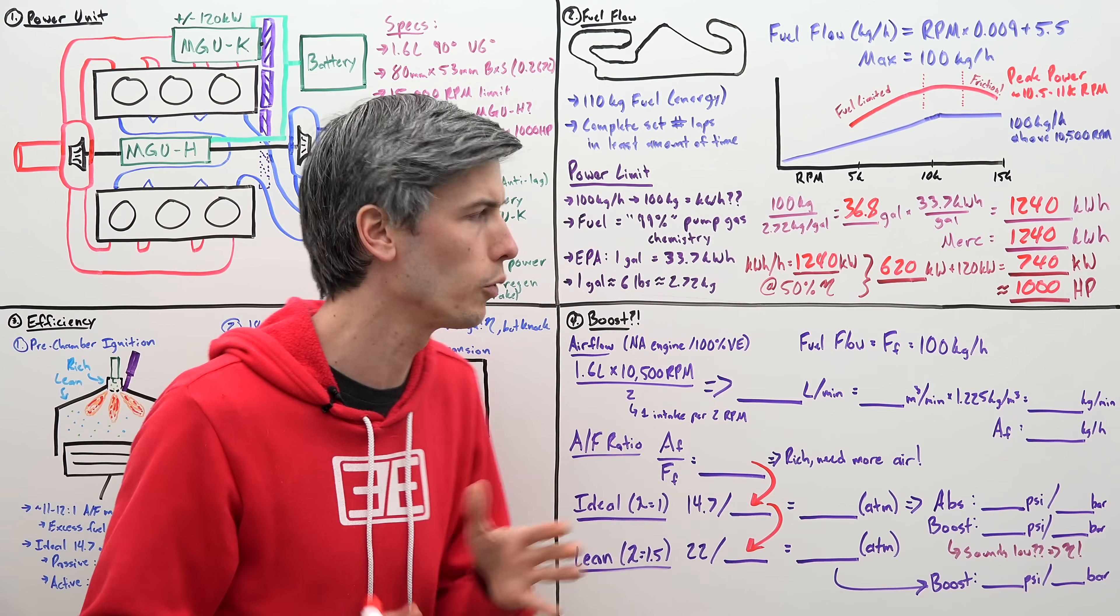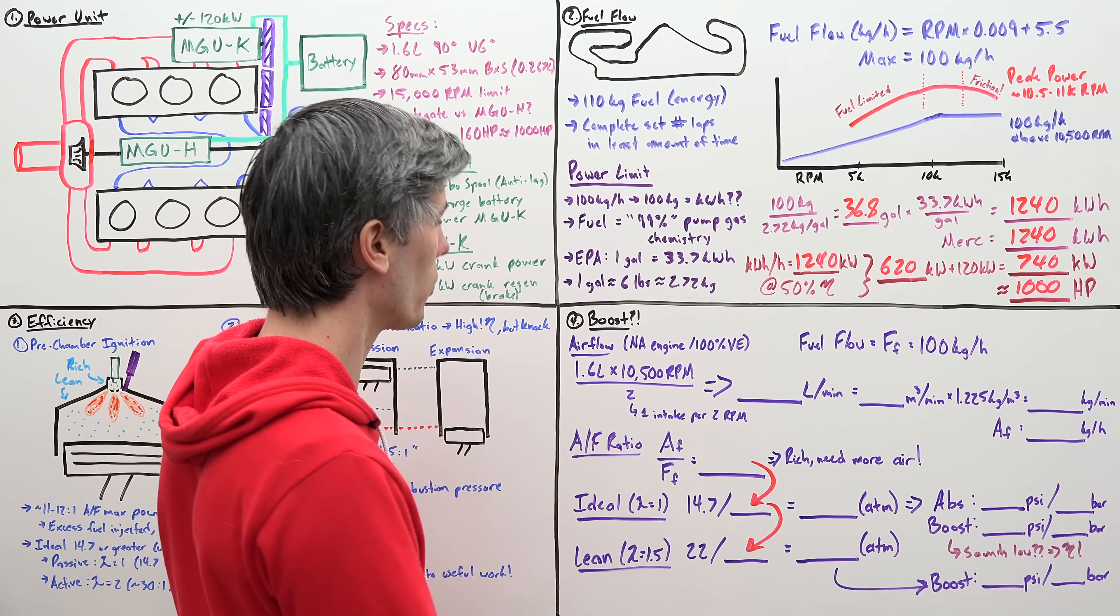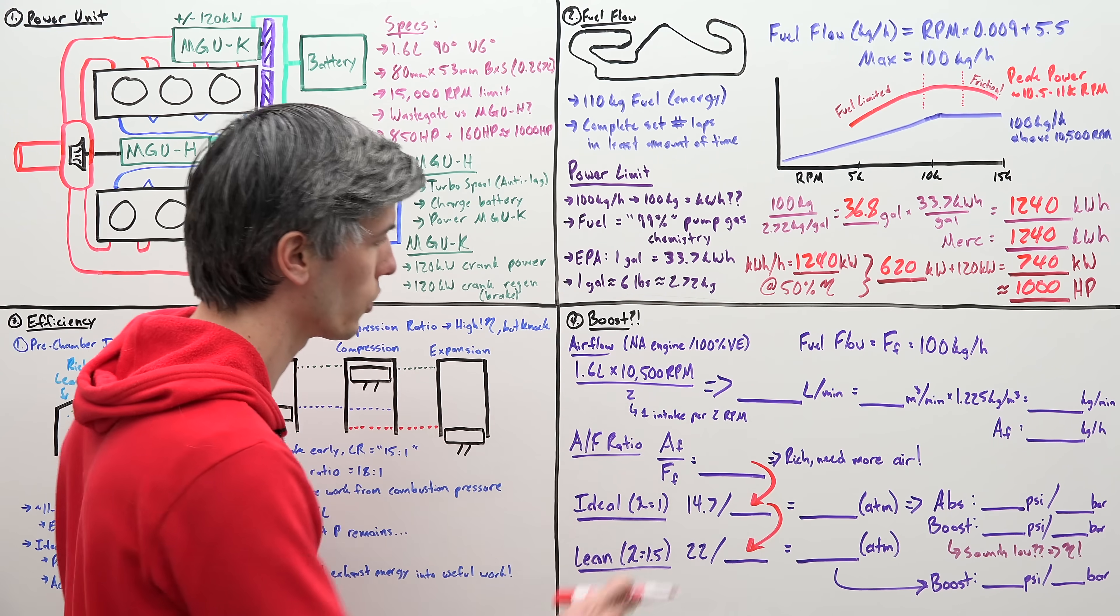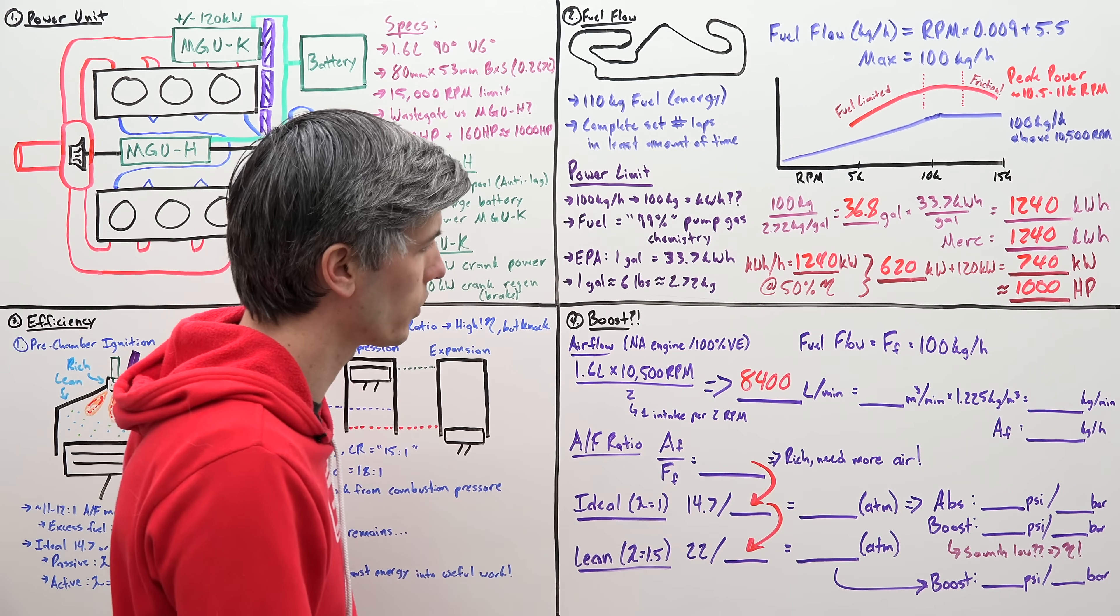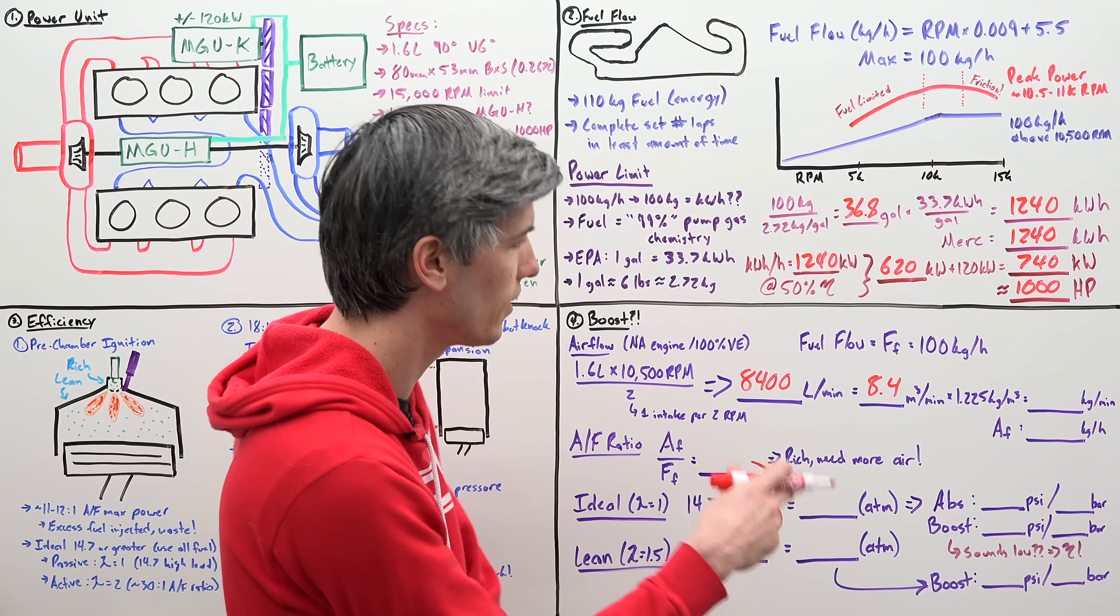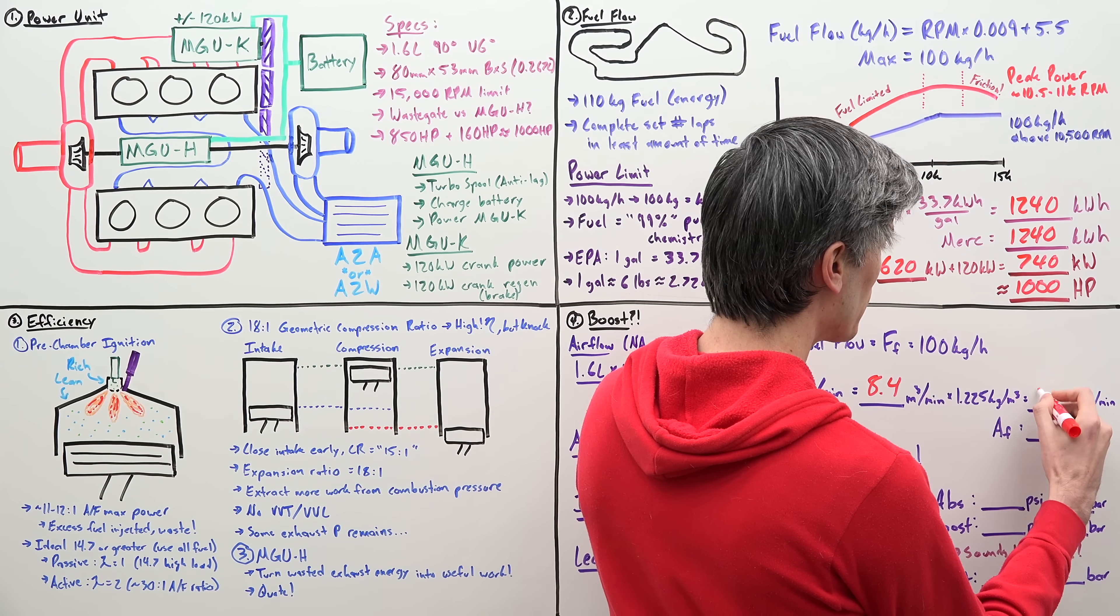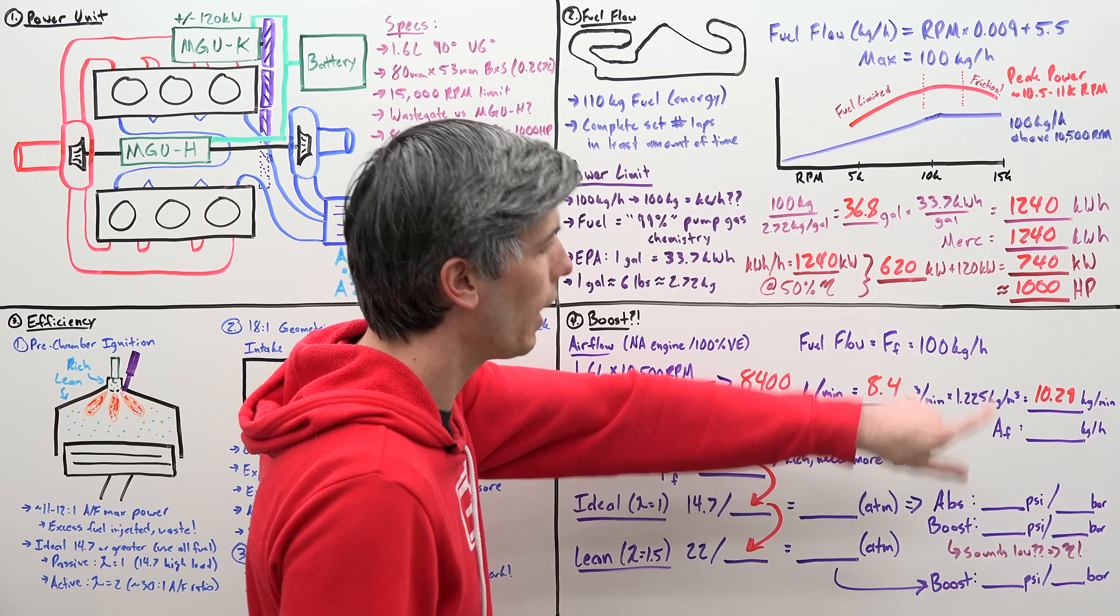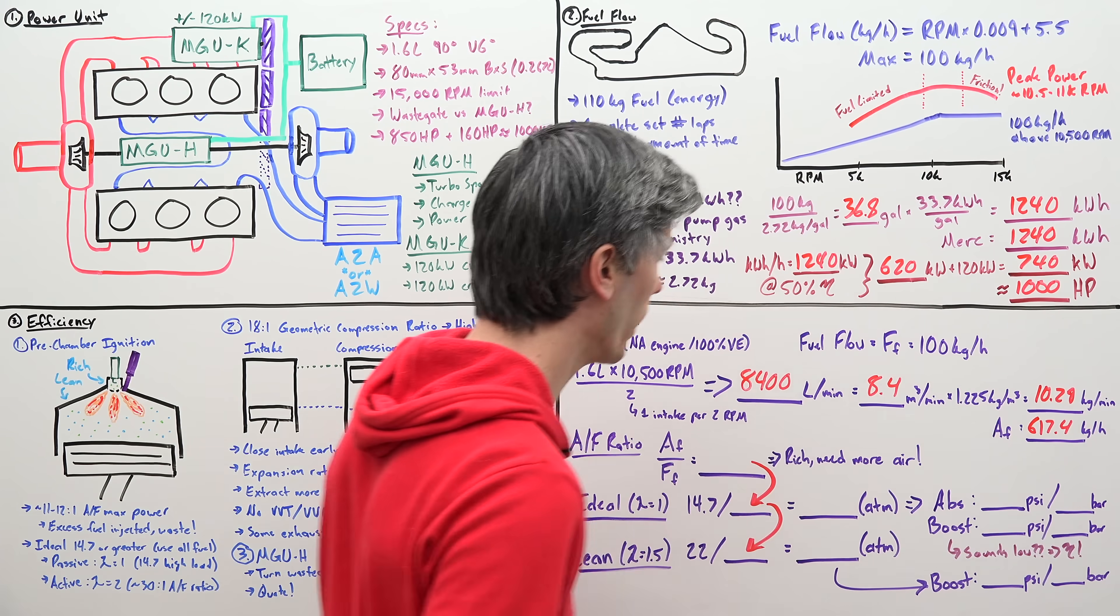Well, let's just start off assuming a naturally aspirated engine with 100% volumetric efficiency. In other words, we have our 1.6 liter engine. It's revving at 10,500 RPM. We're going to multiply those together. That's going to give us the total amount of air flow going through it. Divide that by two, because we only have one intake stroke per 2 RPM. And that means going through our engine, we have 8,400 liters per minute. Because the metric system is beautiful, that means we have 8.4 meters cubed per minute. Now, we can multiply that by air density at sea level. So, if we were at sea level, the amount of air going through the engine at 10,500 RPM, the naturally aspirated engine would be 10.29 kilograms per minute.